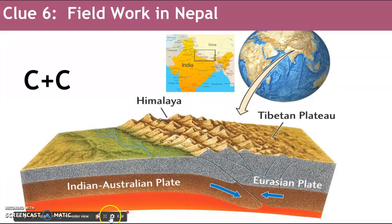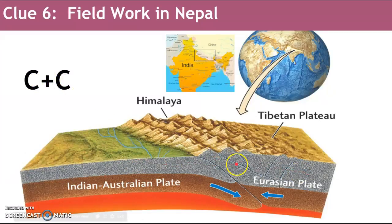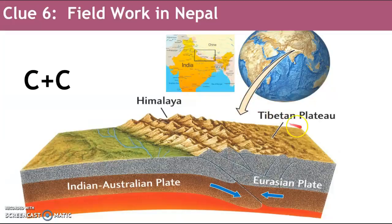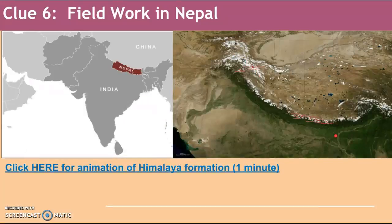Just as a reminder, continental plus continental created the Himalayas — a convergent boundary with two continental crusts. Nepal is a country that sits in between India and China, and much of the Himalayan mountain range falls within this country. On the map you can see Nepal, China, and India on either side — this is a satellite view.